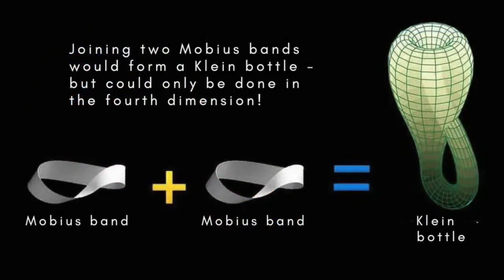An ordinary three-dimensional bottle has a crease or fold around the opening where the inside and outside of the bottle meet. A sphere doesn't have this crease or fold, but it has no opening. A Klein bottle has an opening but no crease.